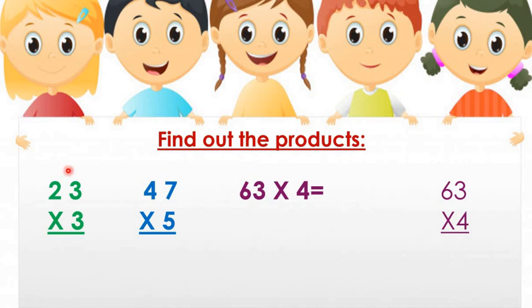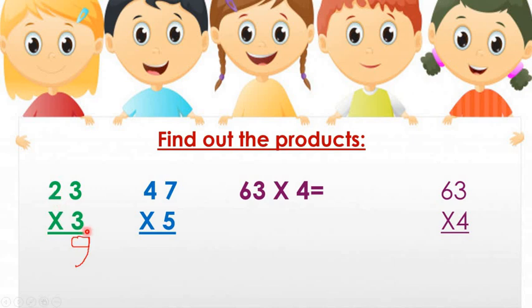Look at the first one: 23 multiplied by 3. We will read the times table of 3. At first we will start with ones place, then tens place. 3 threes are 9, so we write 9. Then the tens place: 3 twos are 6, so we write 6. So the answer is 69.